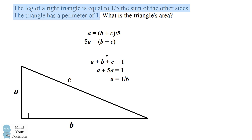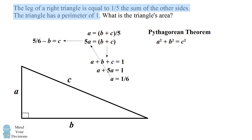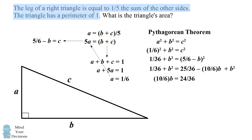We need to solve for one more side, so we'll use our equation relating A, B, and C. Solving for C gives C equals five-sixths minus B. To solve for B, we'll use the Pythagorean theorem: A squared plus B squared equals C squared. We know the value of A and we know C in terms of B, so we can simplify this equation and solve that B equals two-fifths.